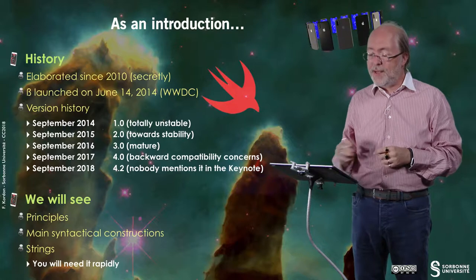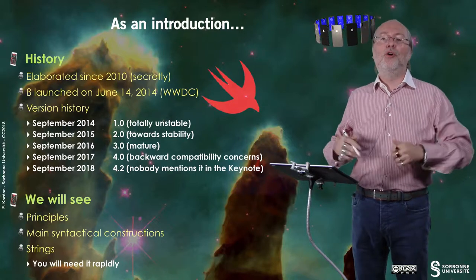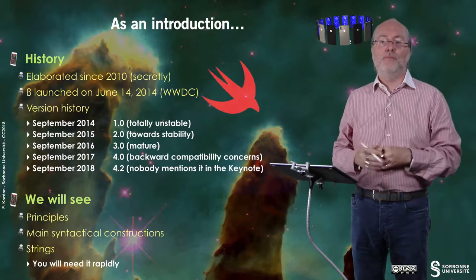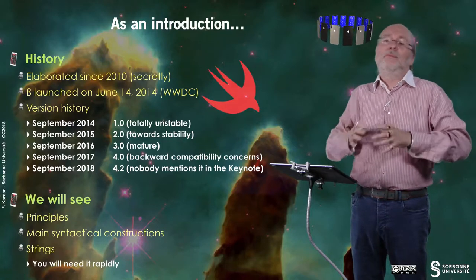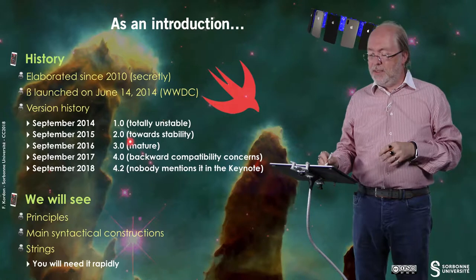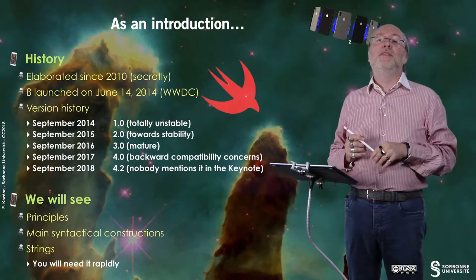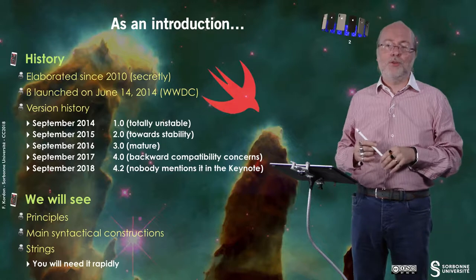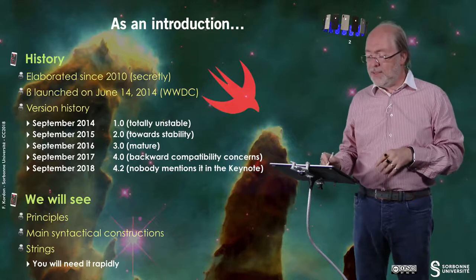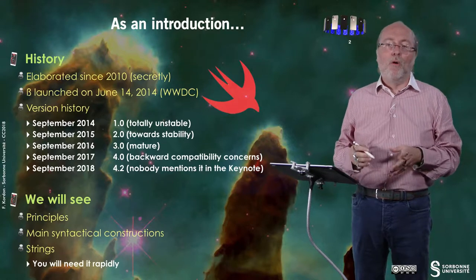Then in 2015, a new major version appeared, gradually going to stability. And in September 2016, the third version was more mature. And since Swift 4, Apple has backwards compatibility concerns.